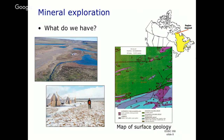On the mineral exploration side, here's a typical example. This is a region in northern Quebec called the Reiton deposit. Here's the geologic map, and here is the geographic map.